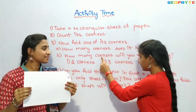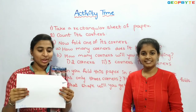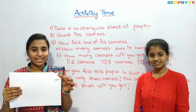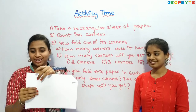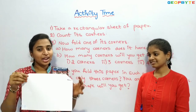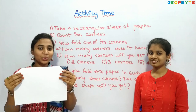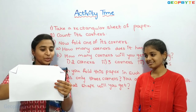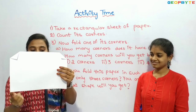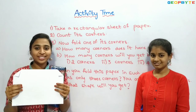How many corners will you get by folding two corners? Already we have one fold at one corner. Let us fold another corner. Now we have two folds at two corners — one, two, three, four, five, six. We have six corners now.